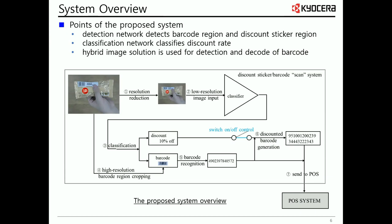In the case of a discount sticker, the classification category results of the discount rates — such as 5% discount, 10% discount, 50% discount — are output. For barcodes, the barcode category results and segmentation of the barcode region are output. If a barcode is detected, we then use its segmentation information to get a partial image containing the barcode and decode it. We finally set the results, combining the discount rate and barcode in the process of linking the scan system and POS system.